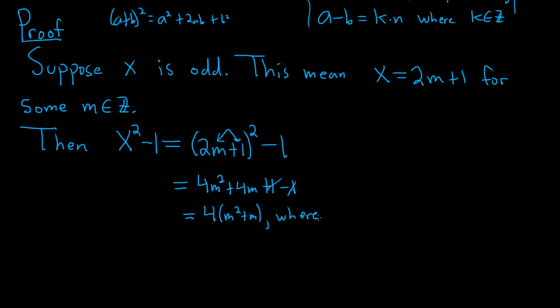Let's be really precise here. So x squared minus 1 equals 4 times m squared plus m, where m squared plus m is an integer. So that kind of takes the place of our k. Our k is this m squared plus m. So you have x squared minus 1 equals 4k, where k is an integer. So that means that x squared minus 1 is a multiple of 4. So this means that x squared is congruent to 1 modulo 4.